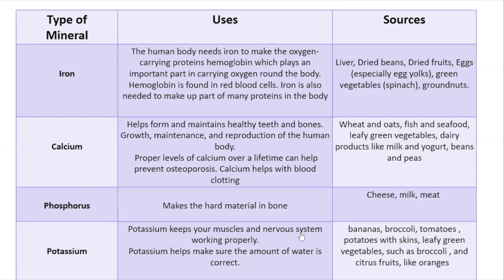Next mineral is calcium. Many of you know we need calcium — parents tell you to drink your milk for strong bones and strong teeth. Calcium is also needed for growth, maintenance, and production of the human body. Healthy proper levels of calcium over a lifetime can help prevent osteoporosis, a condition in which the bones are fragile. Calcium also helps with blood clotting. Good sources include wheat, oats, fish and seafood, leafy green veggies, dairy products, beans, and peas.